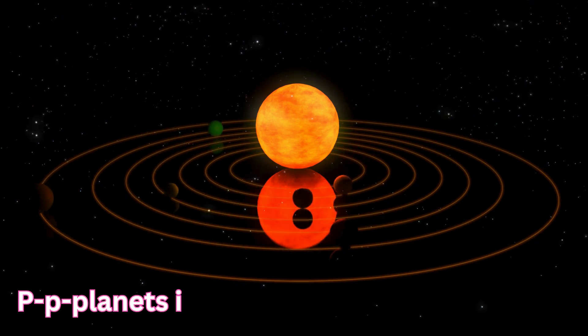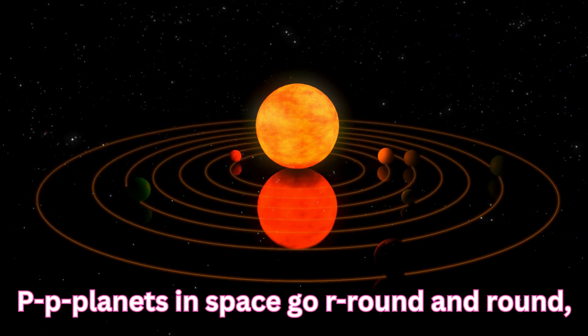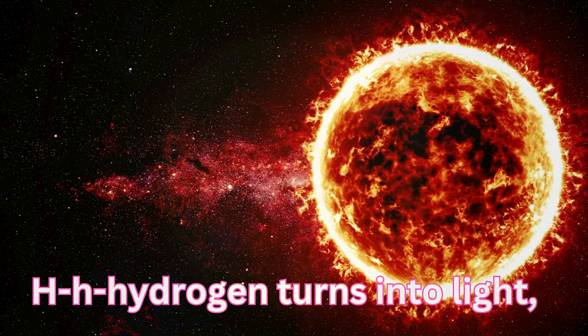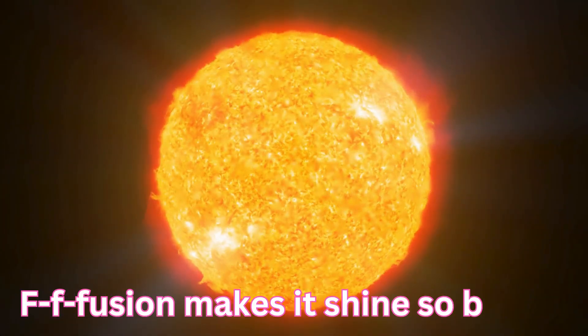Planets in space go round and round, all around the sun. Hydrogen turns into light, fusion makes it shine so bright.